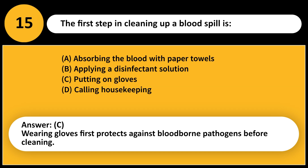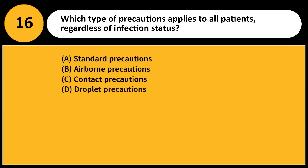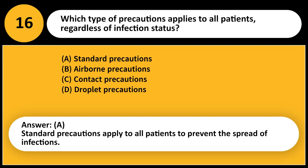Which type of precautions applies to all patients, regardless of infection status? A. Standard precautions. B. Airborne precautions. C. Contact precautions. D. Droplet precautions. Answer: A. Standard precautions apply to all patients to prevent the spread of infections.